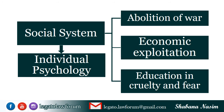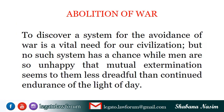فرسٹ چپٹر پڑھتے پڑھتے ہم وہاں تک آ چکے ہیں جہاں رسل unhappiness کی دو causes بتاتے ہیں جو partly اپنا اپنا کردار ادا کرتی ہیں۔ ان دونوں میں سے ایک ہے social systems اور دوسری ہے individual psychology۔ رسل کا ماننا ہے کہ individual psychology بڑی حد تک social systems کی پیداوار ہے۔ وہ تین قسم کے social systems پر روشنی ڈالتے ہیں: جنگ کا خاتمہ، معاشی استحصال، اور خوف کے ماحول میں تعلیم کا دیا جانا۔